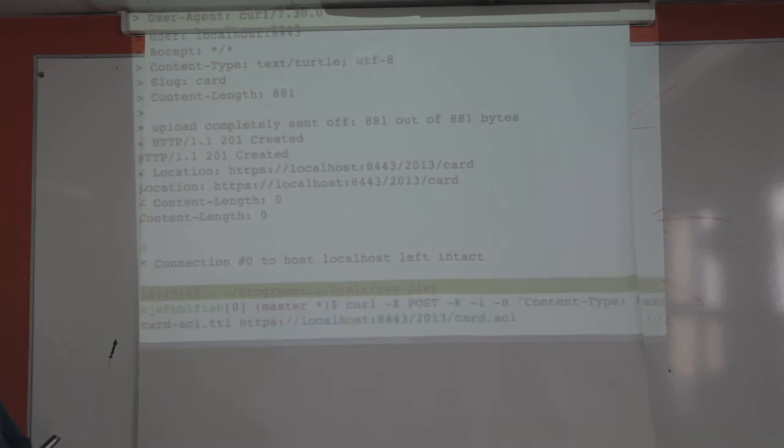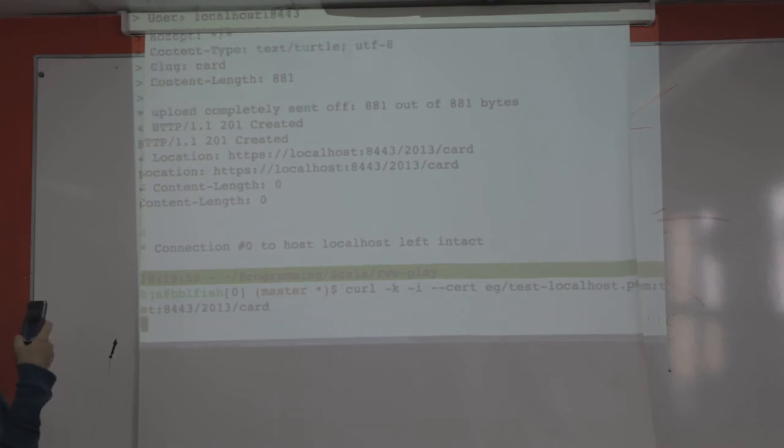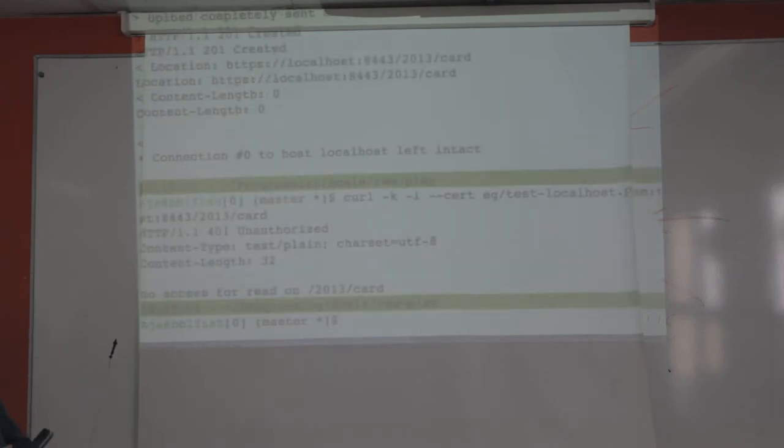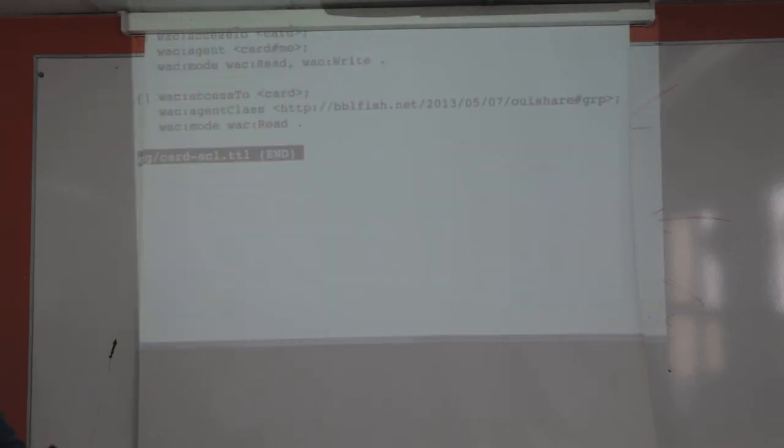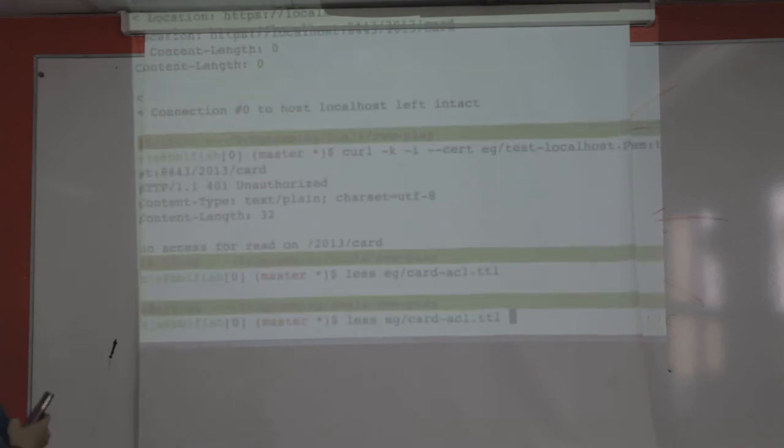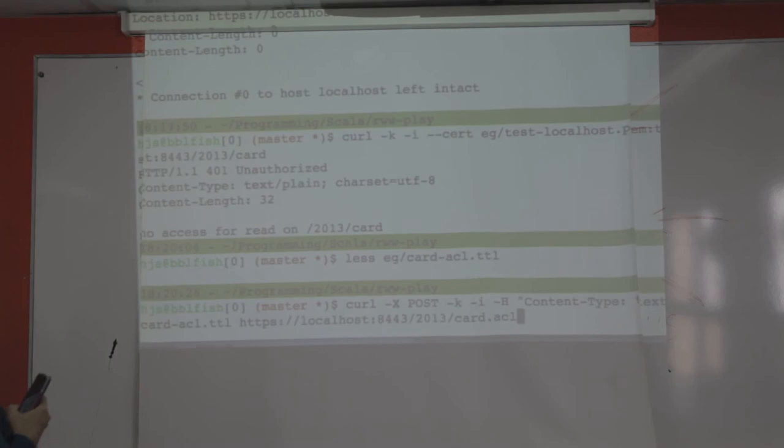If I now want to just get that file, right here, that's just a curl that does a get, it will tell me that it's unauthorized. So, now I'm going to upload the ACL file. And this says, for example, here that people have access to the document card who are in the class WeShare group that I just created. And I'm going to upload this using Post again.